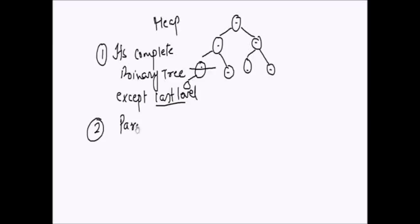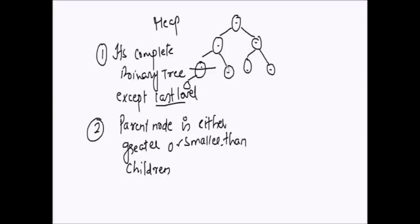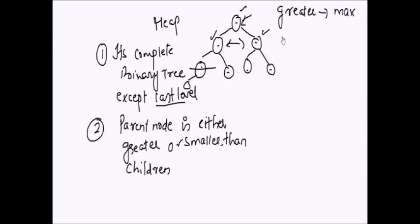The second property which defines the type of heap is that the parent node is either greater or smaller than its children. If the parent is greater than both its children, it is called a max heap. If it is smaller than both its children, it is called a min heap.